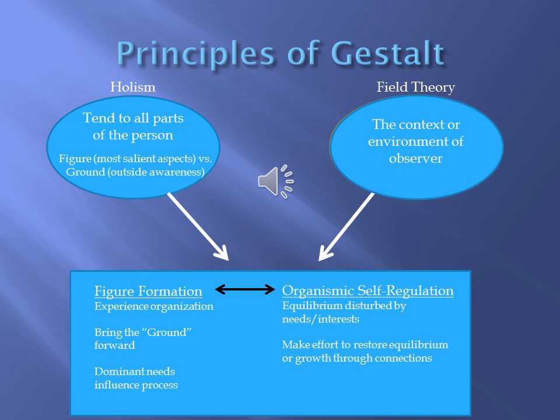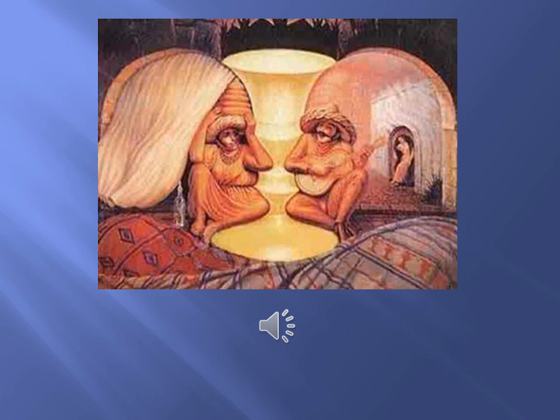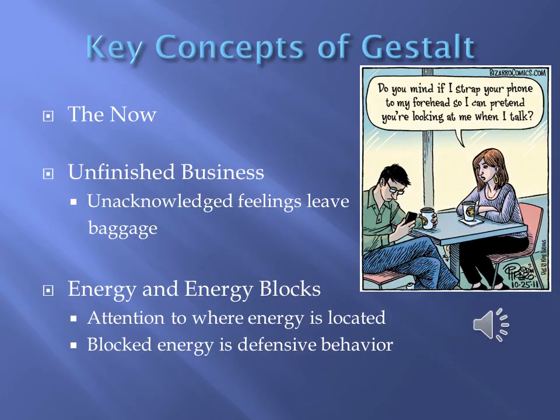Now I want you to practice a little bit further by looking at the images on the next couple of slides and quickly write down whatever image it is that you see. After looking at the two images, what do you see? Is there anything else that you see that you didn't notice at first? Think for a second and write down how this might relate to Holism, Field Theory, the figure formation process, and organismic self-regulation.